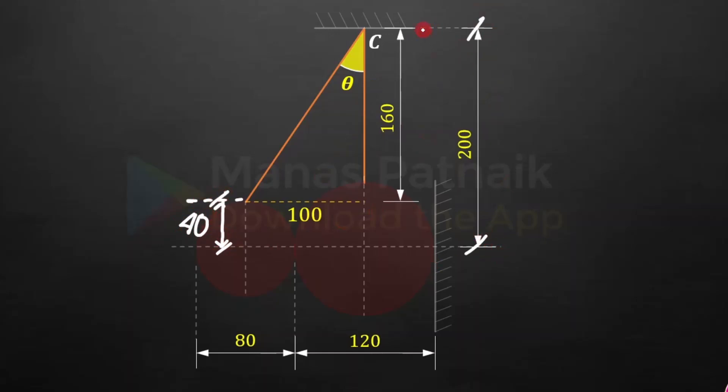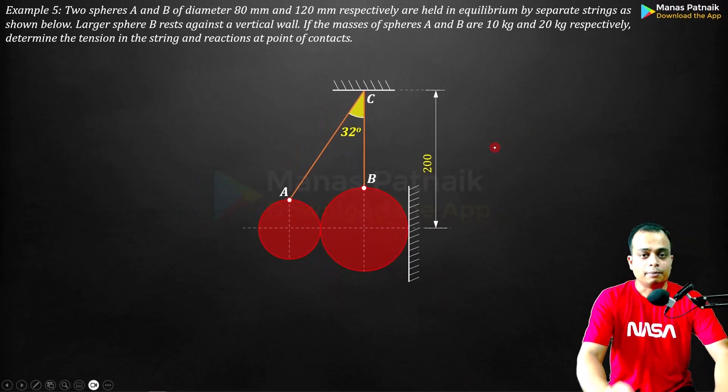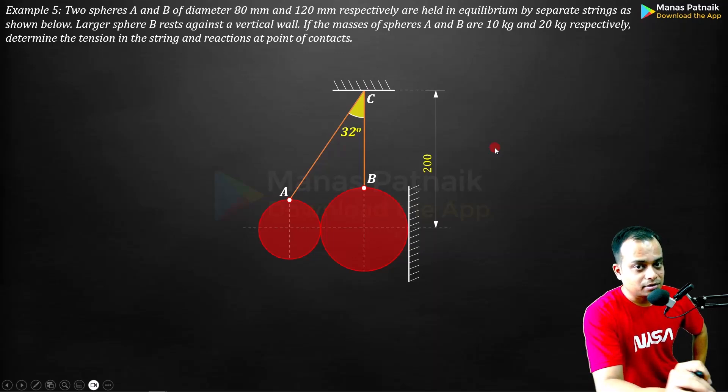If you watch, 200 minus 40 is going to give you 160. Now we know these two data points. This side opposite to the angle is the perpendicular, this is your base, so you can apply tan theta equals perpendicular upon base. Theta will be 32 degrees approximately. This video is also available in Hindi - link is in the description. You can download my application and learn from courses on engineering drawing, mechanics, AutoCAD and more.